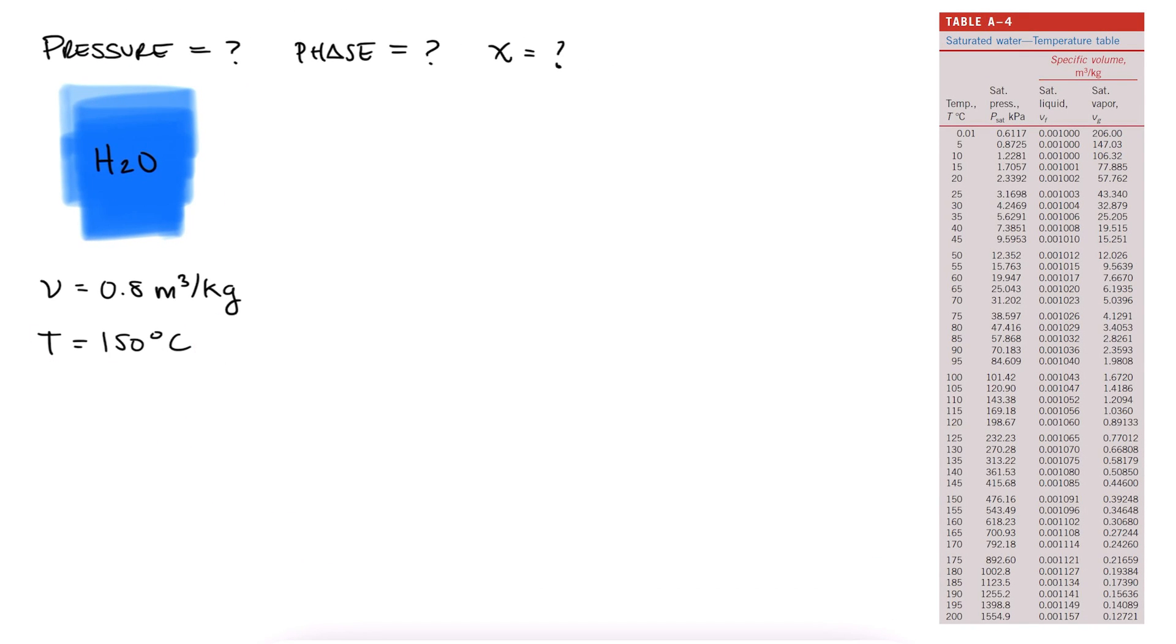We find here that for a temperature of 150 degrees, the specific volume for a saturated vapor is 0.39, which means that our water, which has a higher specific volume, is in a superheated phase.